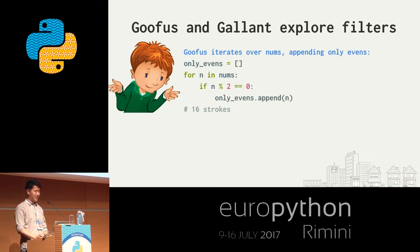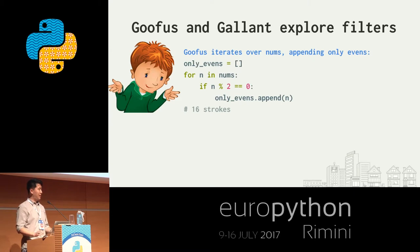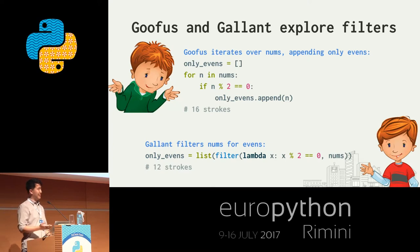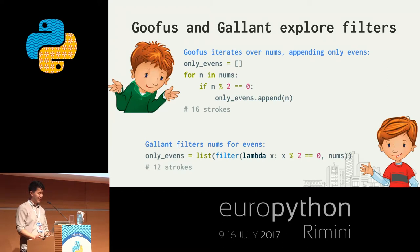And finally, filters. Goofus iterates over numbers with a for loop, maintains a result accumulator list, and appends a number when `num % 2 == 0` — 16 strokes. Gallant runs `filter(lambda x: x % 2 == 0, nums)`, which is that same if-statement returning true when even, run over the nums list — producing only even numbers with 12 strokes. That's quite a bit shorter, a distinct advantage for functional programming.